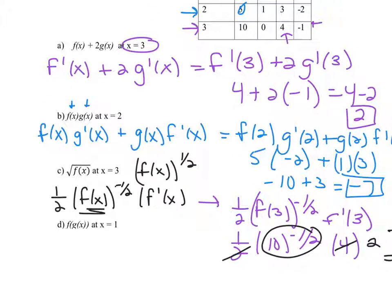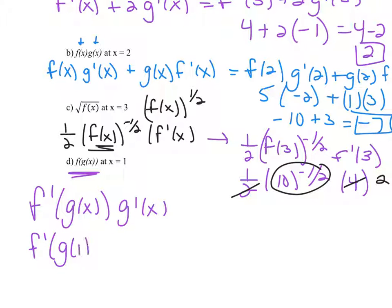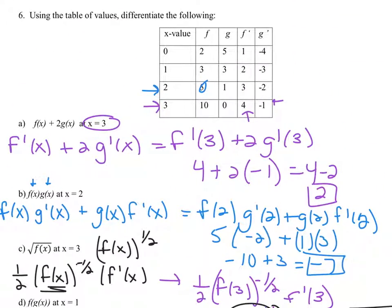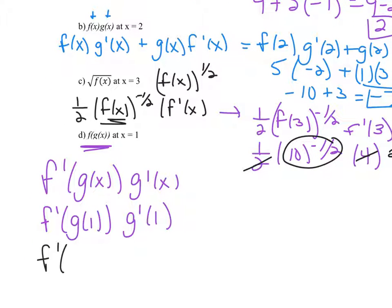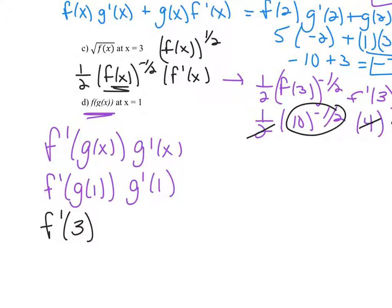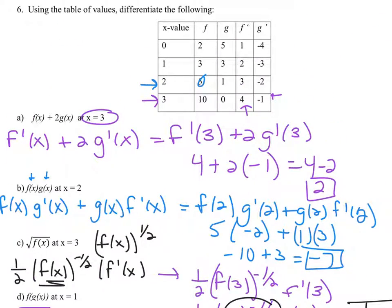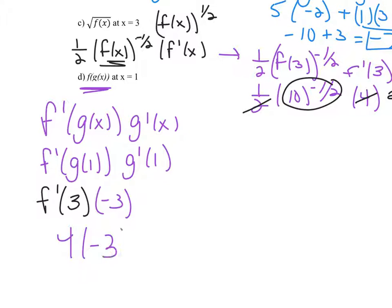The last part of this question is a chain rule because you have a function within a function — f(g(x)). Take the derivative of the outside, f prime, but keep the inside, then multiply by the derivative of the inside, g prime(x). Evaluated at x equals 1: f prime of g(1) times g prime(1). From the table, g(1) is 3, so we need f prime(3), which is 4. And g prime(1) is negative 3. So 4 times negative 3 gives negative 12.